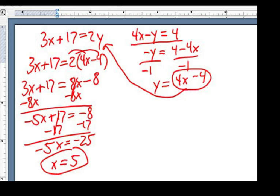x equals positive 5. Now I can look at it in here. And I get y equals 20, take away 4, which is 16. x equals 5, y equals 16.